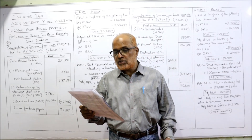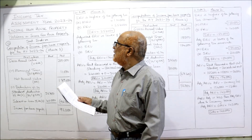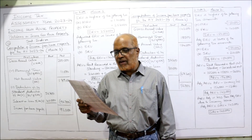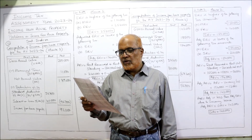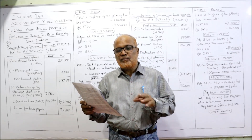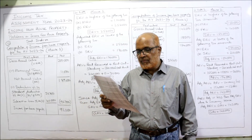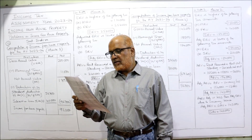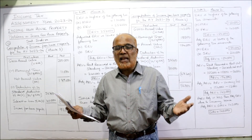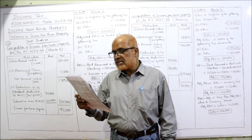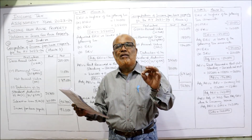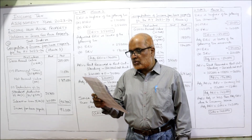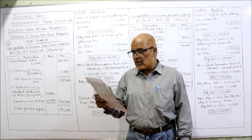We are not concerned with the date of purchase because it's very long back. Currently we are in assessment year 23-24, previous year 22-23. Municipal rental value MRV, fair rental value FRV, and standard rental value SRV are given — the houses are governed by Rent Control Act because SRV is given. Actual rent received and interest paid on loan taken to repair the house are given. Municipal taxes: 10% on MRV for the first house and 12% for the second house. Unrealized rent: 30,000 and 26,000. Vacancy loss: 10,000 and 12,000.